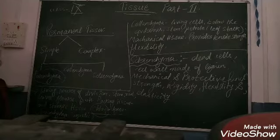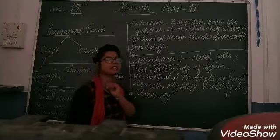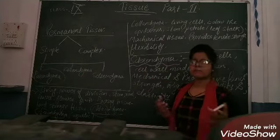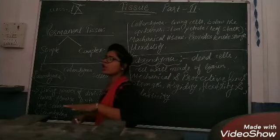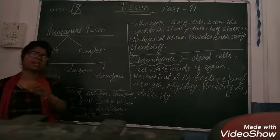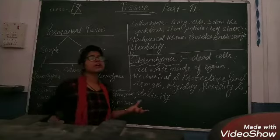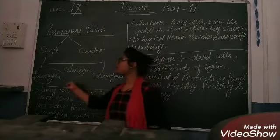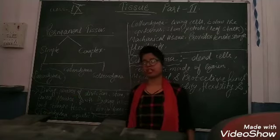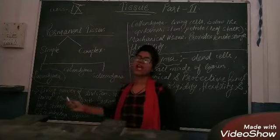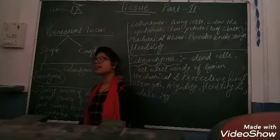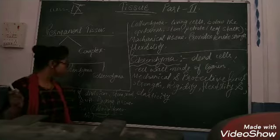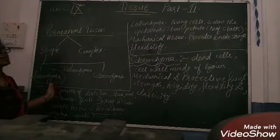If you talk about aerenchyma, 'aer' means air spaces. The plants which are aquatic — which live in water — have to float on the upper surface of the water. The aerenchyma helps aquatic plants to float in the water by providing air spaces. That is why it is called aerenchyma.